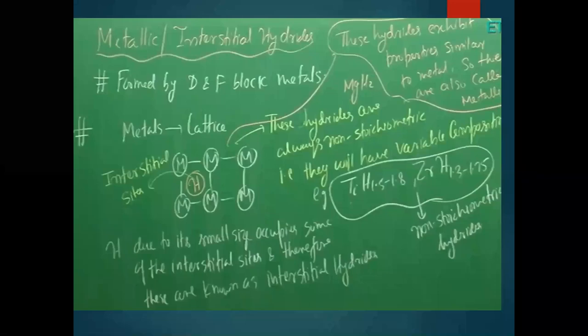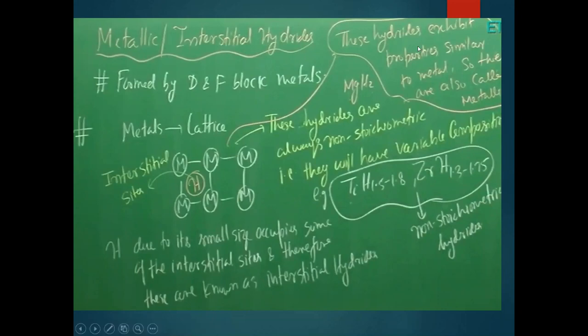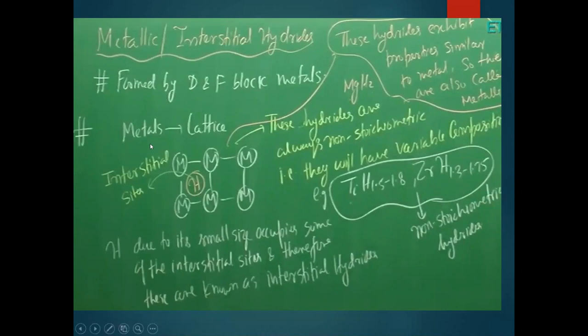The second category is metallic or interstitial hydrides. D-block and f-block elements form these hydrides when they react with hydrogen. They are called metallic hydrides because they exhibit properties similar to metals. They are called interstitial hydrides because of how hydrogen occupies positions in the metal lattice.